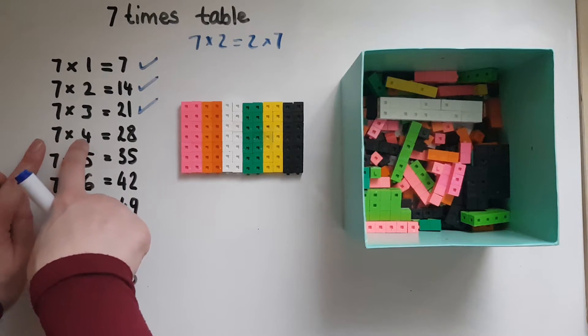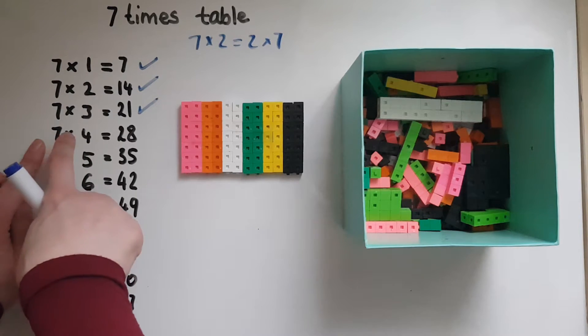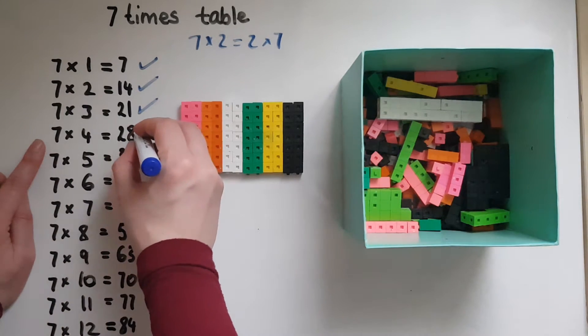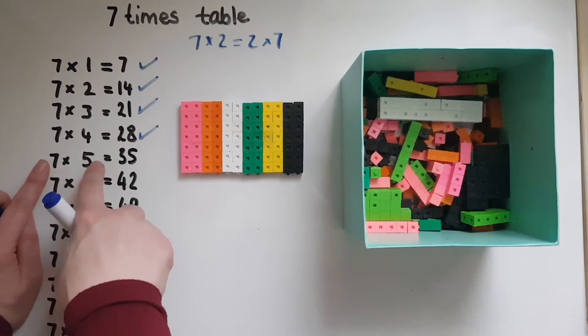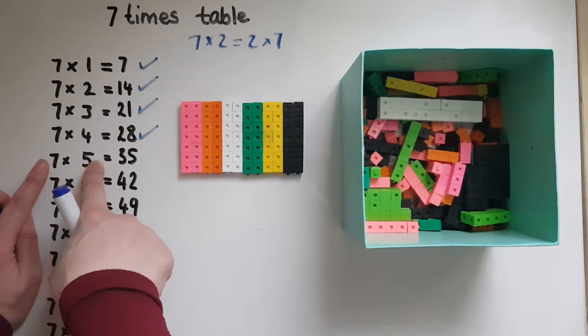which we can break down into two and two. So double seven is fourteen, and another fourteen gives us twenty-eight. And looking at the fives, fives are quite straightforward because you go five, ten, fifteen, twenty, twenty-five, thirty, thirty-five.